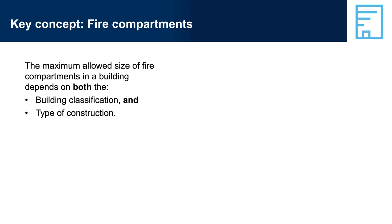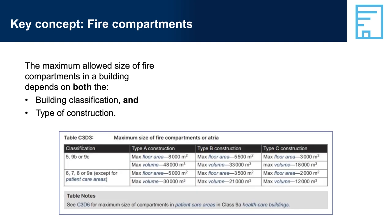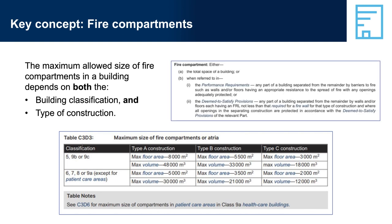Key Concept — Fire Compartments. The maximum floor area of fire compartments required for a building depends on a combination of the building classification and the type of construction. The requirements in Table C3D3 are DTS provisions and a designer-builder always has the option of developing a performance solution to meet the performance requirements. Alternatively, a designer-builder can choose to use a different type of construction, which would change the requirements for fire compartmentation.